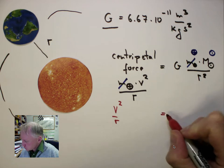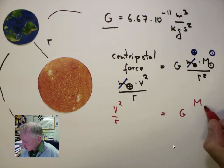Is equal to G times solar mass, divided by r squared.